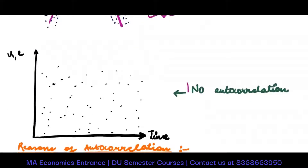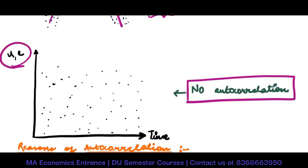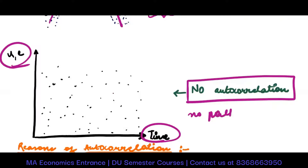Now here, no autocorrelation — because with these error terms, over time they are just randomly split everywhere. It's not that one is affecting the value of the other. No pattern whatsoever can be found over time, so we have no autocorrelation.